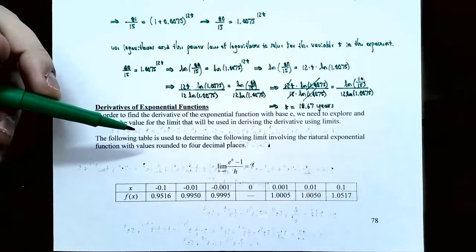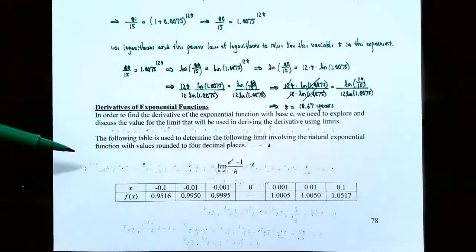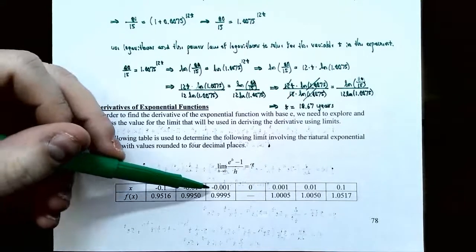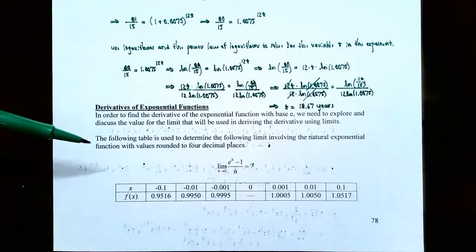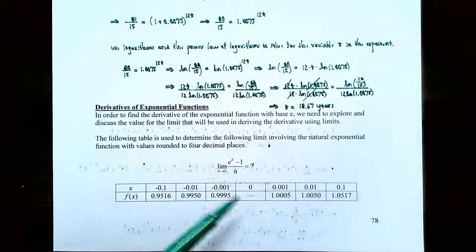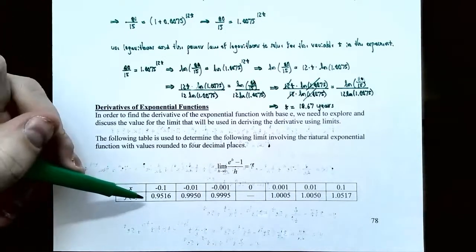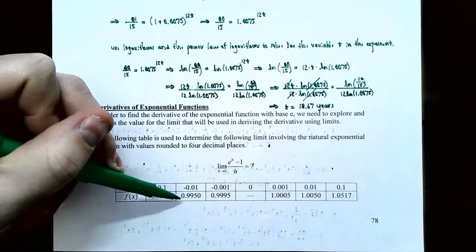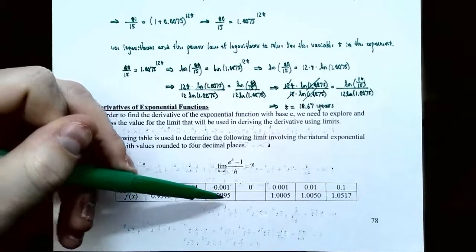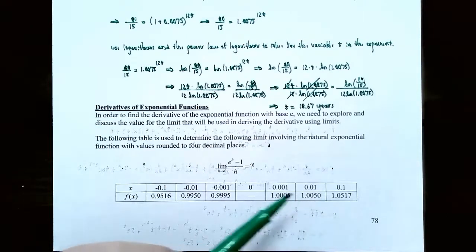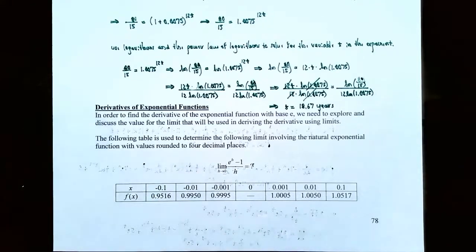The following table is used to find the value of that limit, involving the natural exponential function, rounding all values to four decimal places. Using h values of negative 0.1, negative 0.01, negative 0.001 (approaching 0 from the left), and 0.1, 0.01, 0.001 (approaching from the right), the y values are 0.9516, 0.9950, 0.9995 from the left, and 1.0517, 1.0050, 1.0005 from the right — all approaching 1.